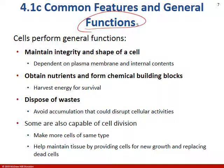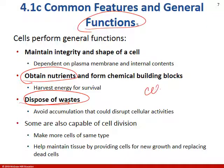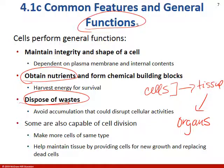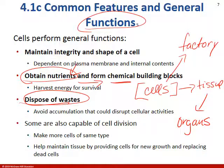Some common functions of cells: they obtain nutrients and dispose of waste. People think of them as mini little factories. Cells make up tissue, and tissue makes up organs — going back to the hierarchy from Chapter 1. Cells are obtaining nutrients, extracting chemicals, building things like proteins, and disposing of waste from chemical buildup and breakdown. If cells don't carry out these general functions, your organs aren't going to work properly.